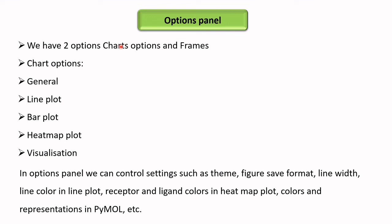In the options panel, there are two different options: chart options and frames. In the chart options you have different plots like line plot, bar plot, heat map plot, and visualization. In this options panel you can control different settings such as the theme and formats to save figures. You can control the line width and line color in the line plot, select colors for receptors and ligands in the heat map plot, and control colors and representations in the pymol visualization.